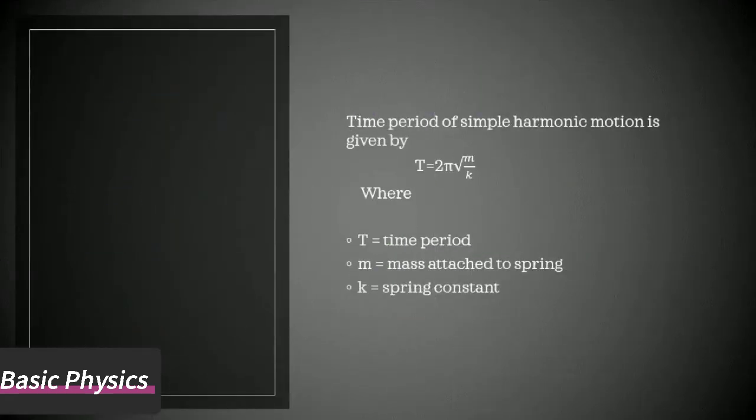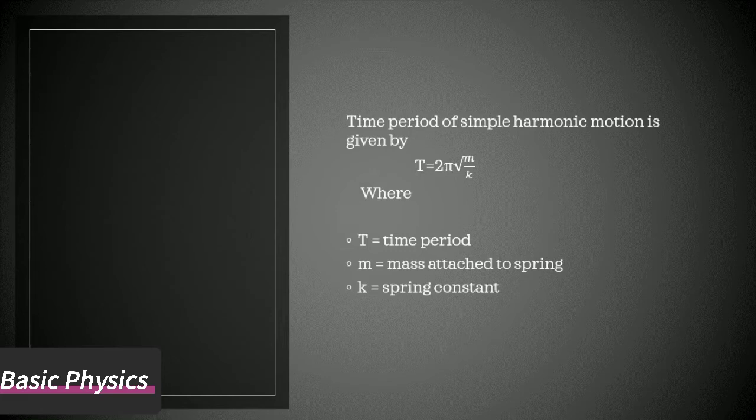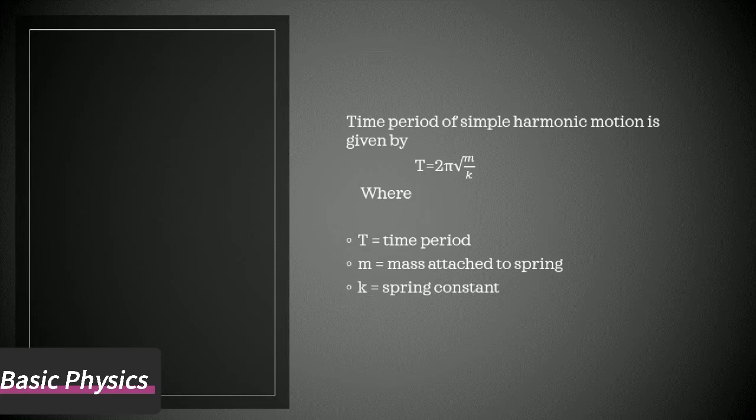Time period of simple harmonic motion is given by T = 2π√(m/k), where T is the time period, m is the mass attached to spring, and k is the spring constant. Its value depends on the nature of the spring.